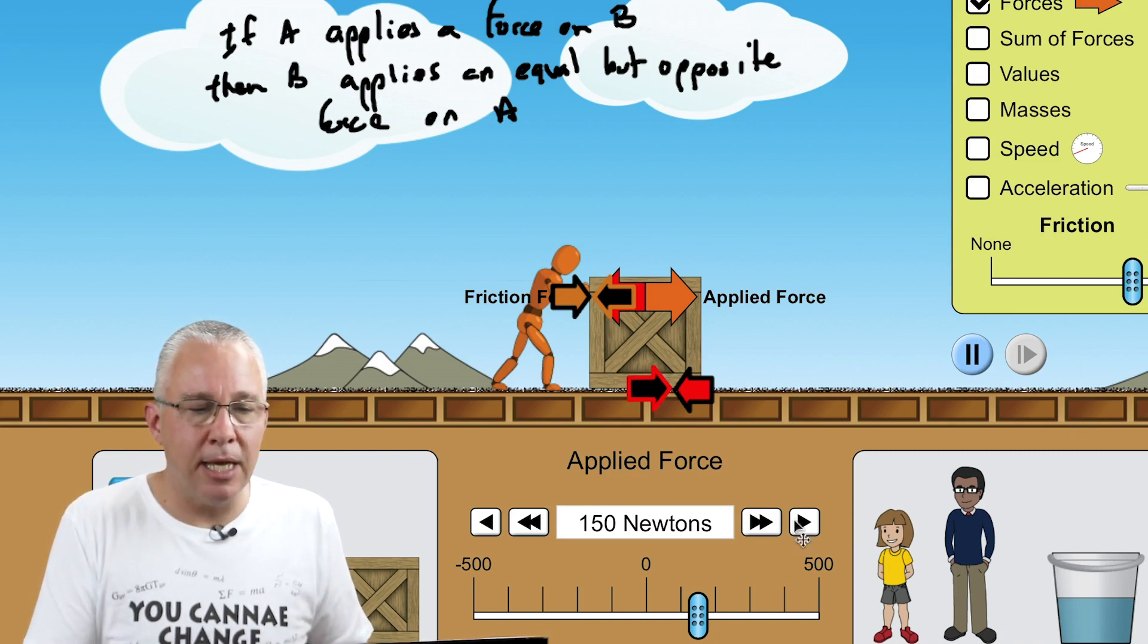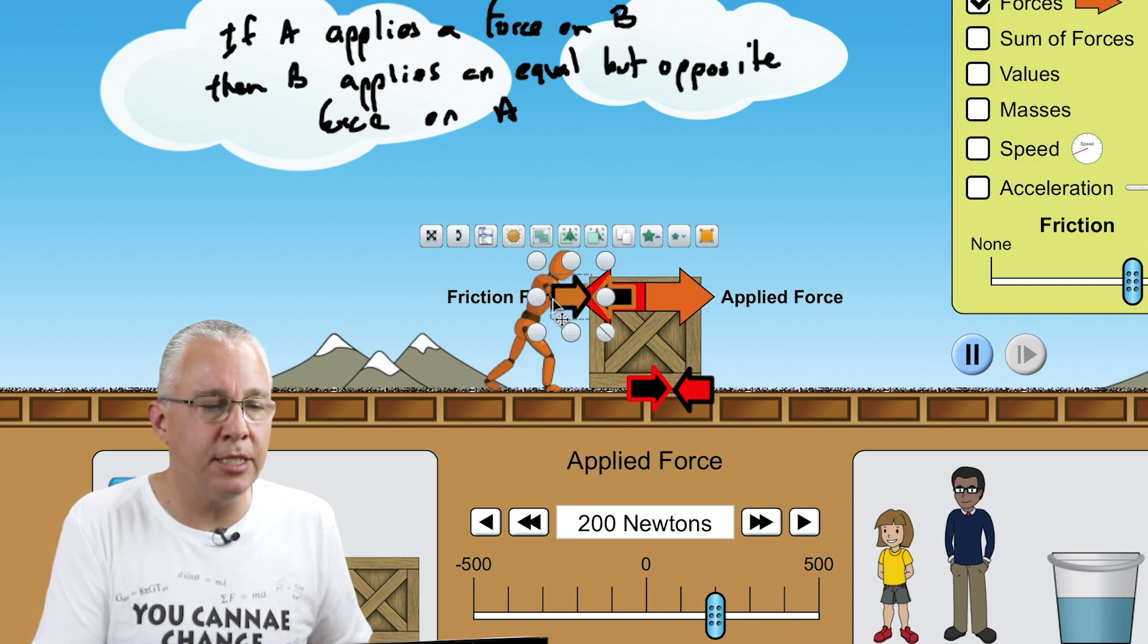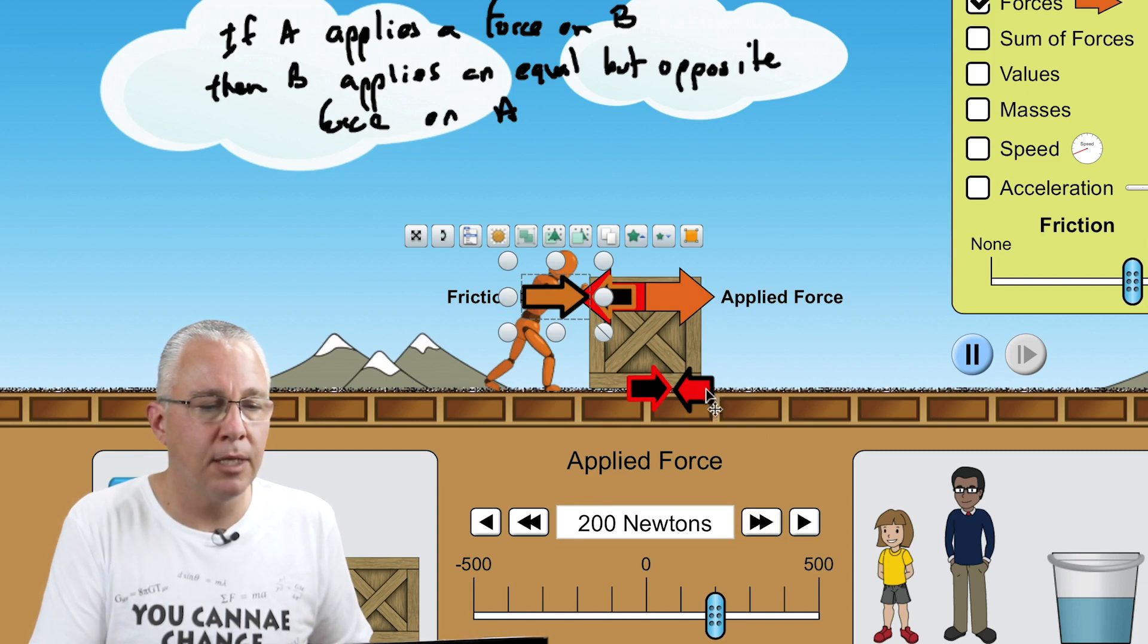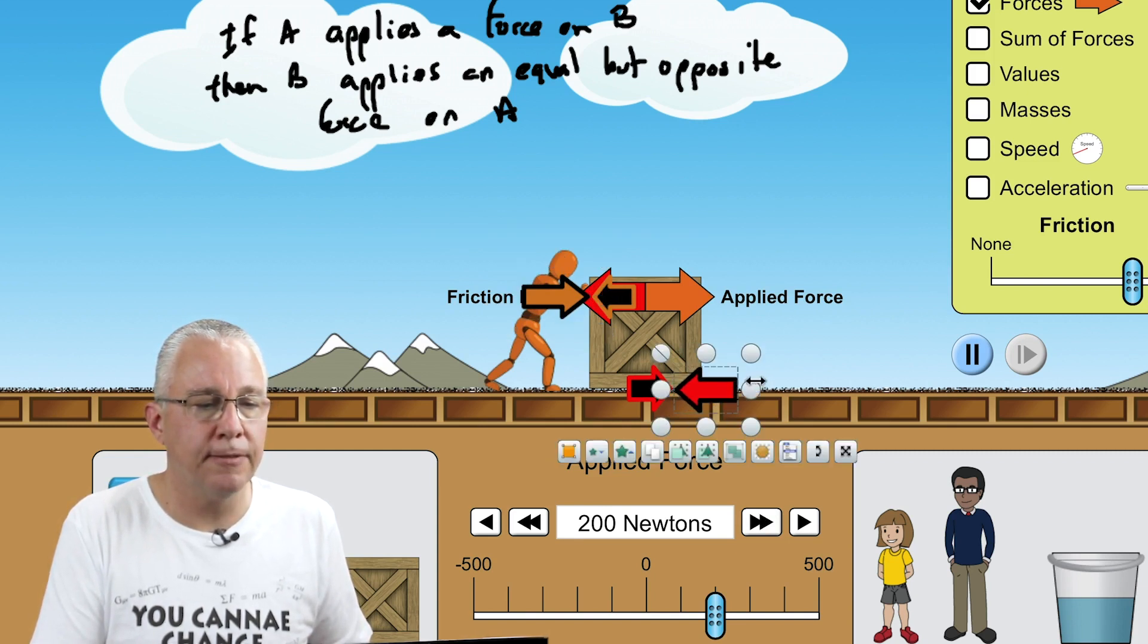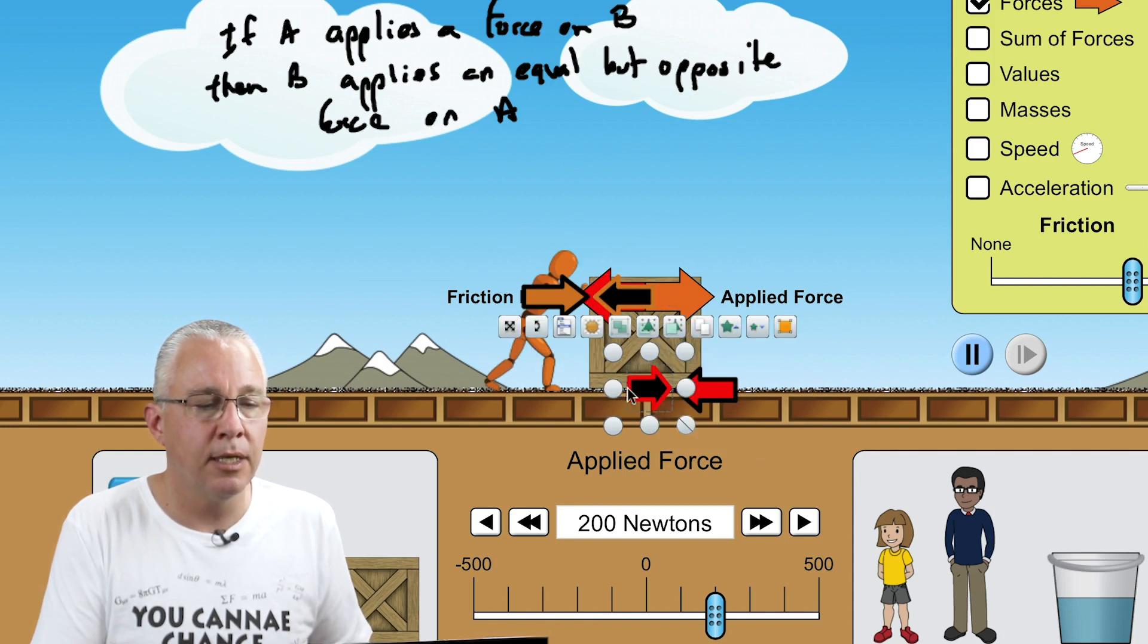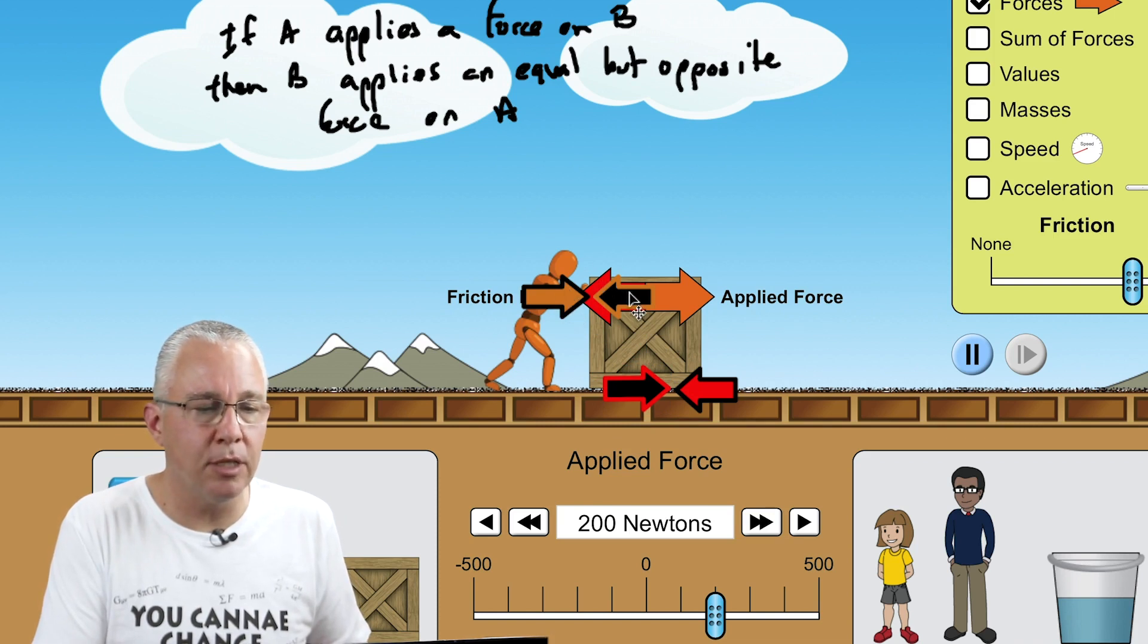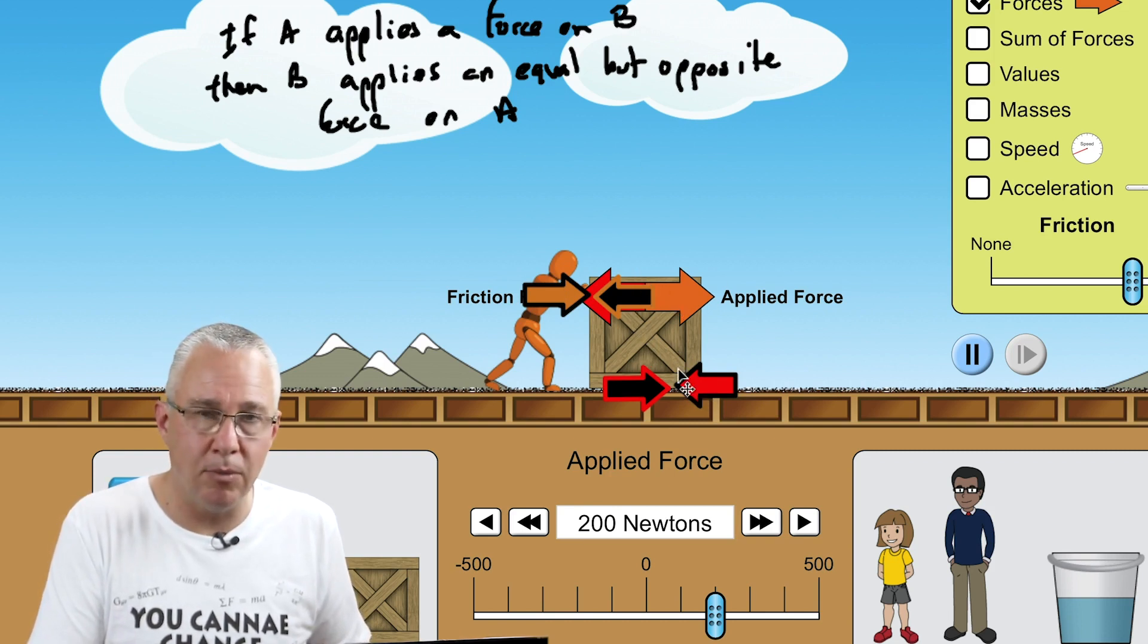Now what happens if I were to increase the force that the guy is pushing? So what's happening is this force has increased. As a result this is increased. But what's also happening is that this force has increased and this force has increased. The reality is that if this force increases on the box, the box pushes back harder. Now these two are always equal, but remember it's this force and this force that are acting on the box. The other forces are not acting on the box. One's acting on the man and one's acting on the ground.